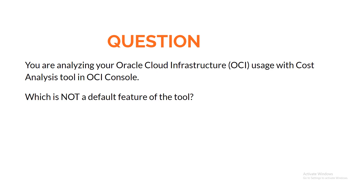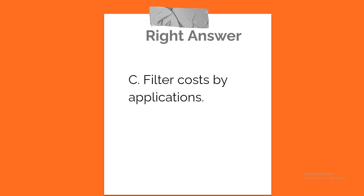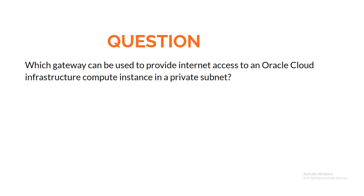Question. You are analyzing your Oracle Cloud Infrastructure usage with the cost analysis tool in OCI console. Which is not a default feature of the tool? A. Filter costs by tags. B. Filter costs by date. C. Filter costs by applications. D. Filter costs by compartments. Correct answer: C. Filter costs by applications.